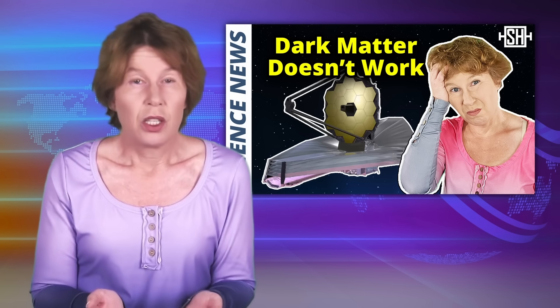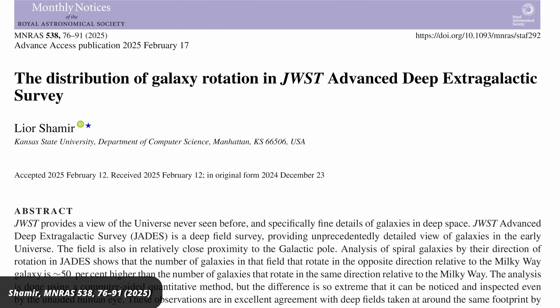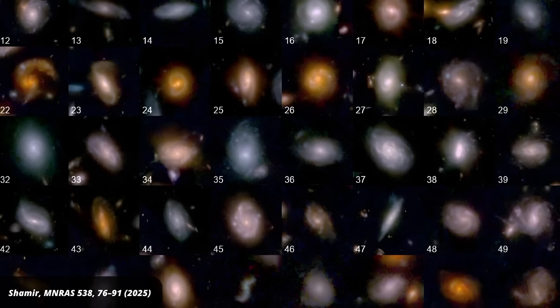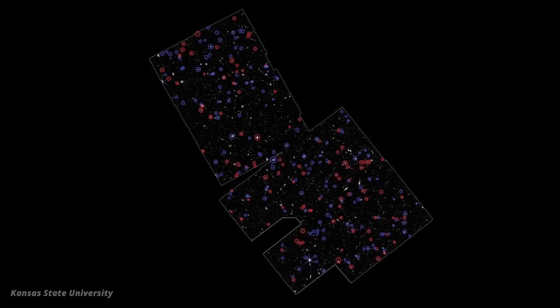But this new finding? No one predicted this. For the new study, researchers zoomed in on 263 of these ancient galaxies to figure out which way they were spinning. They found something astonishing. About two-thirds of the galaxies are rotating in the opposite direction as our Milky Way.